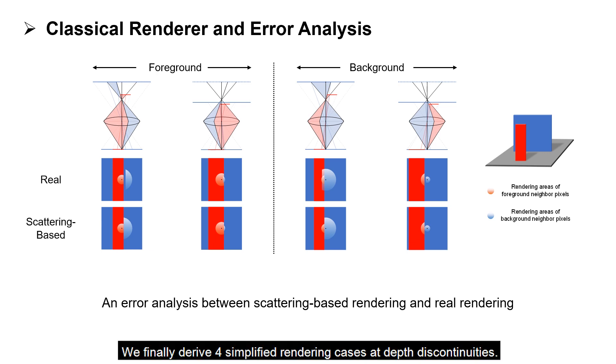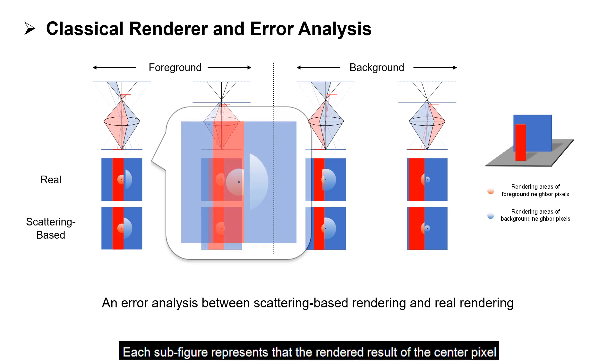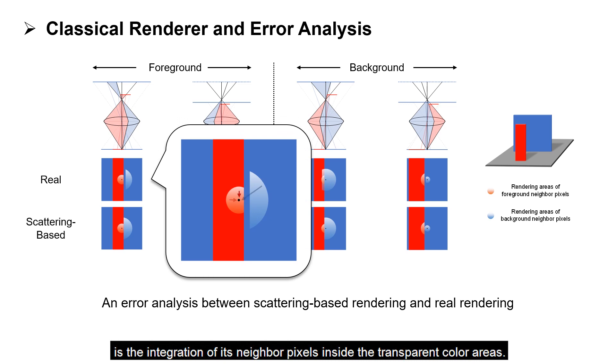We finally derive four simplified rendering cases at depth discontinuities. Each subfigure represents that the rendered result of the center pixel is the integration of its neighbor pixels inside the transparent color areas.